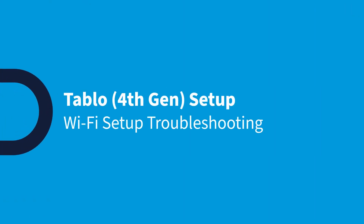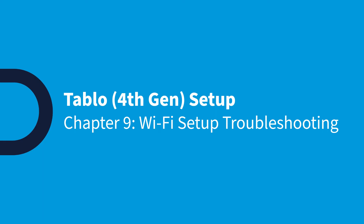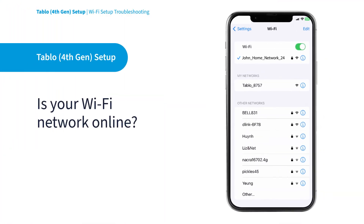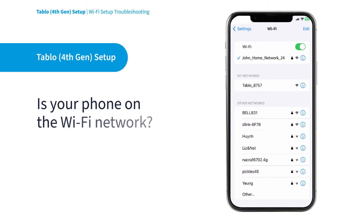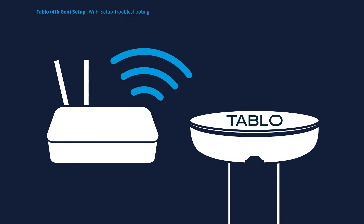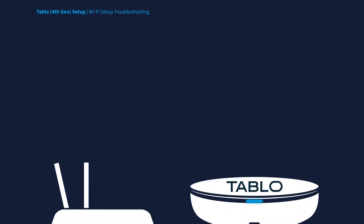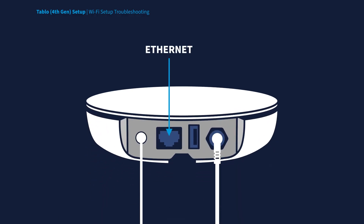Having trouble with the Tableau Wi-Fi setup? Here are a few quick troubleshooting steps to try. First, you should verify that your home's Wi-Fi network is online, and that your mobile device is connected to that Wi-Fi network instead of your mobile data provider. It also helps if your Tableau and your router are as near as possible, even if only during the Wi-Fi setup process. And remember to make sure that there is nothing plugged into the Ethernet port, as well as the USB port on your Tableau device.